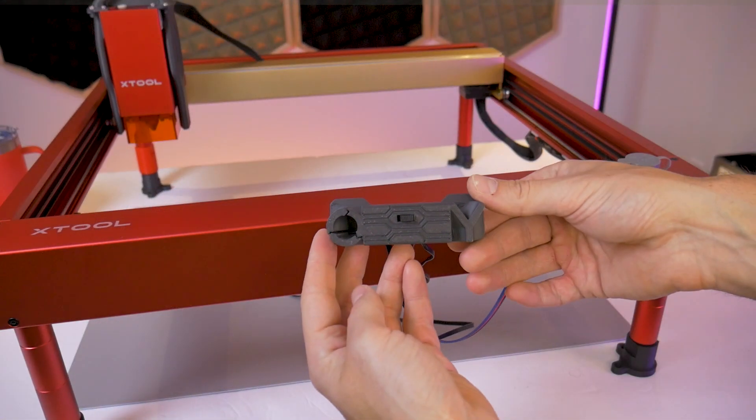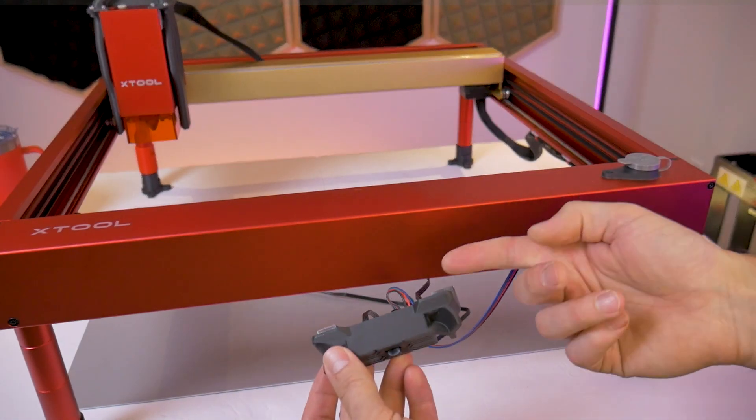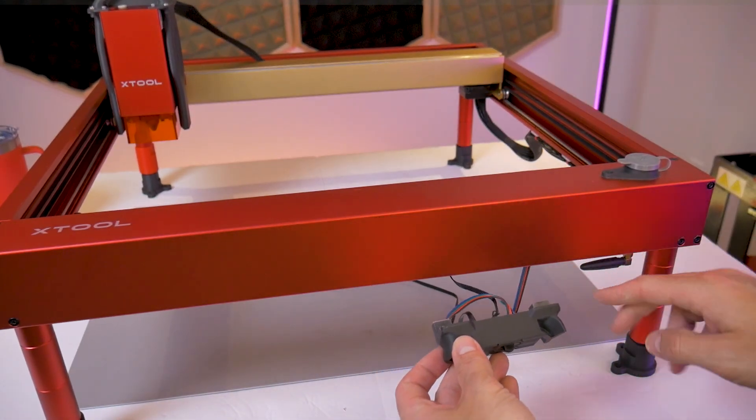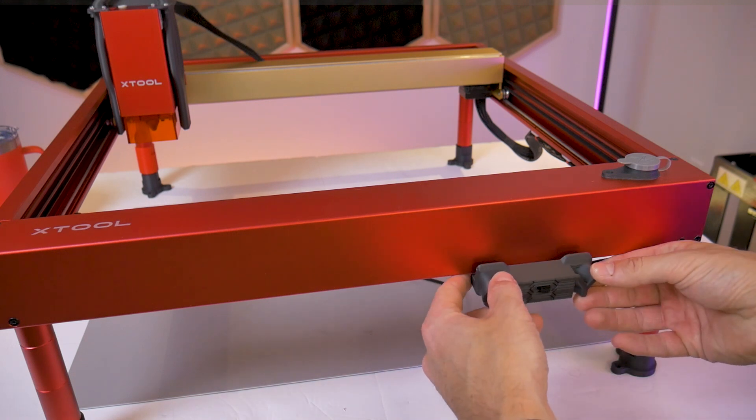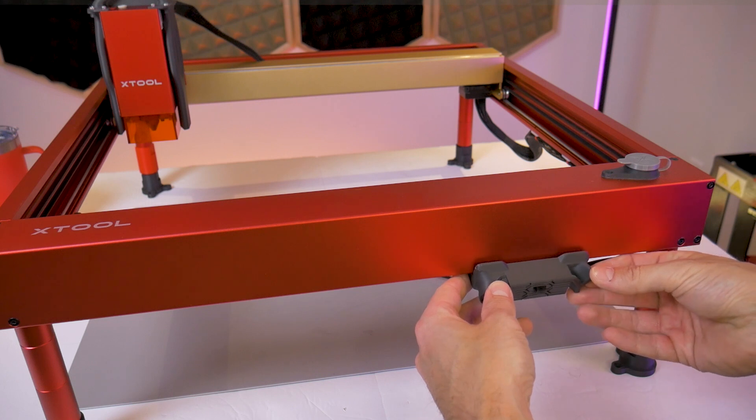But before we connect the RA2 we're going to use the included mounting tape to adhere the switch to the front of the machine. The placement doesn't have to be extremely precise but I'm going to put it just to the left of the wi-fi antenna.